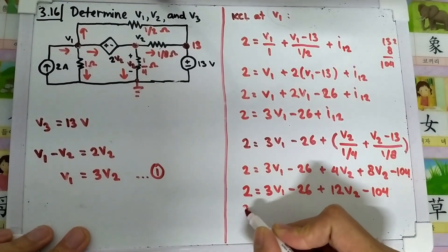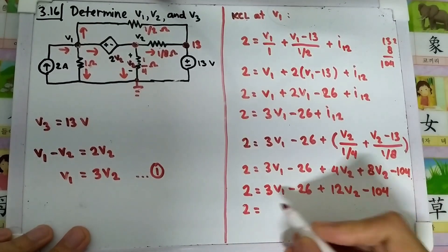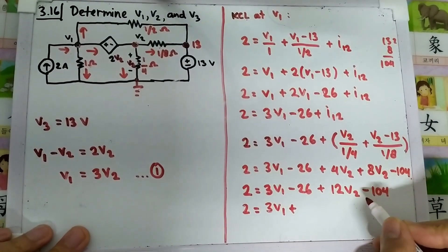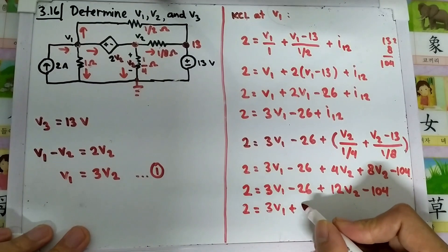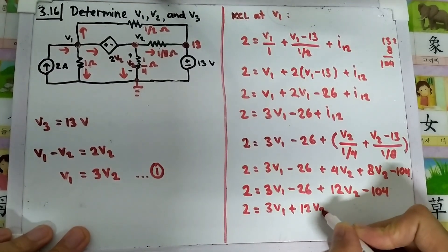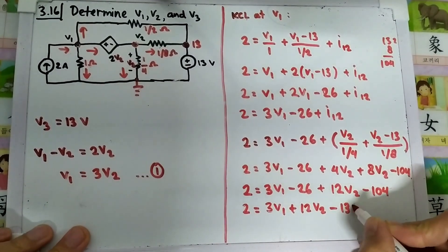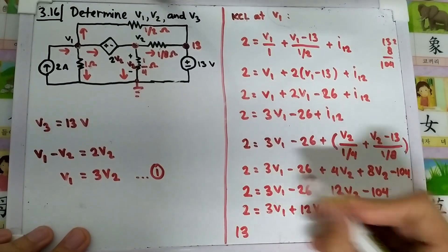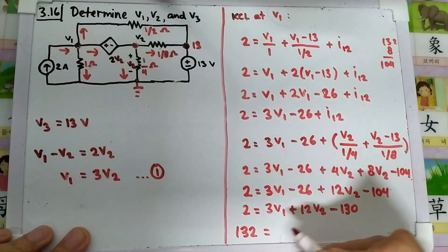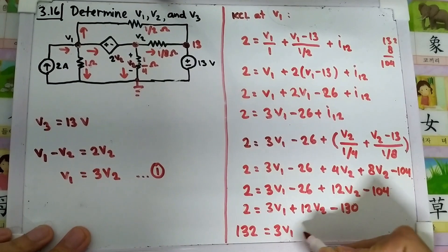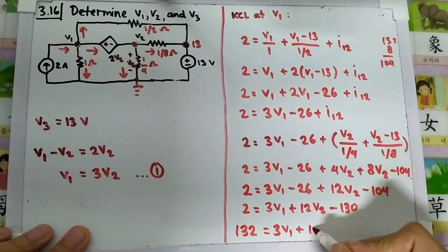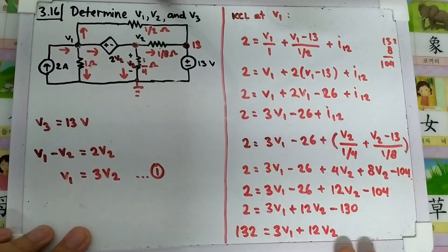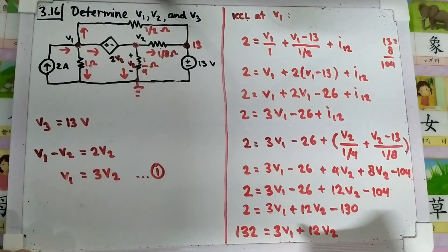Substituting back, we get 2 equals 3V1 plus 12V2 minus 130. Rearranging, 132 equals 3V1 plus 12V2. Since V1 equals 3V2, we can now substitute to solve the system.